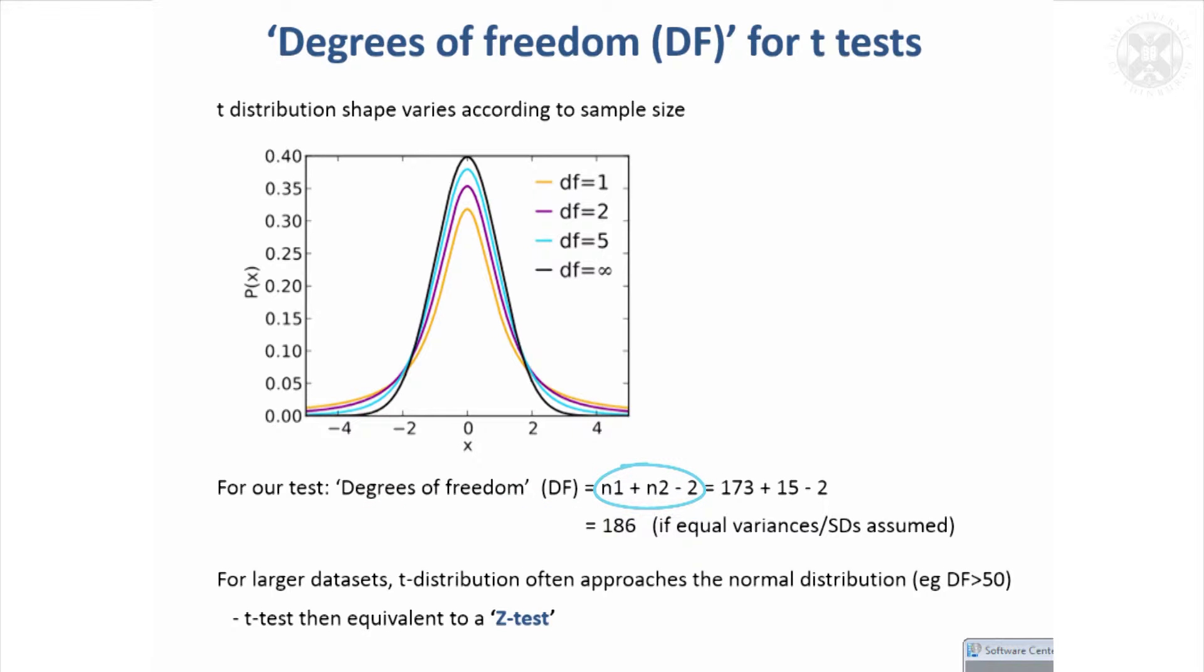That degrees of freedom is going to dictate the exact shape of the null distribution. You can see the black line is if you've got a very large degrees of freedom, it's going to have a taller distribution, and then for smaller degrees of freedom where you've got smaller sample sizes, it's going to be a little bit wider, and that will affect your p-value a bit.